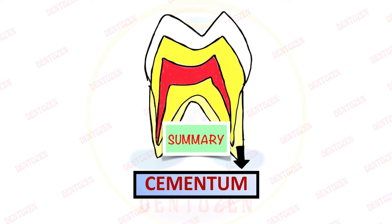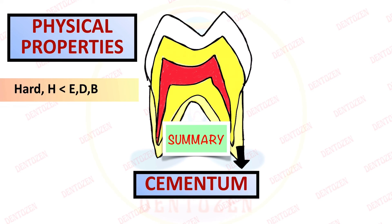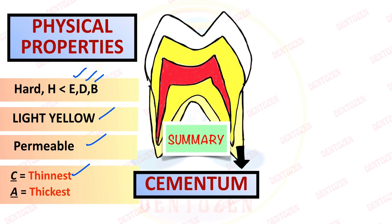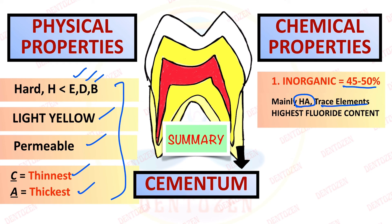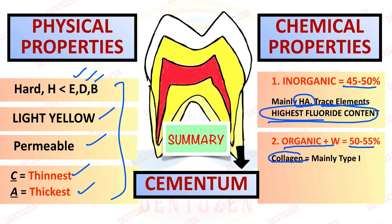So that is physical and chemical properties. Let's have a summary. Physical properties: hardness is less than enamel, dentine, and bone. Color is light yellow, permeable. Thickness is thinnest at cervical and thickest at the apical region. It keeps forming throughout life. Now talking about the chemical properties, inorganic component 45 to 50%, mainly hydroxyapatite and other trace elements, and it has the highest fluoride content.